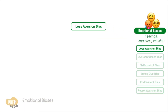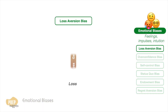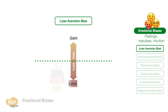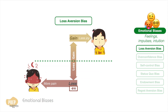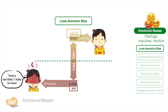First: loss aversion. This arises from feeling more pain from a loss than pleasure from an equal gain in magnitude. For example, if an investor loses ten dollars, he would feel much more anguish than the joy he would have if he gained ten dollars.